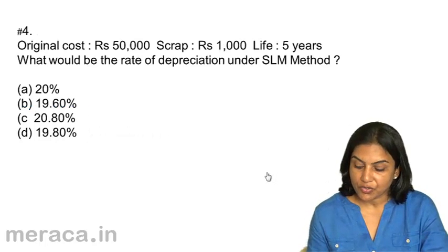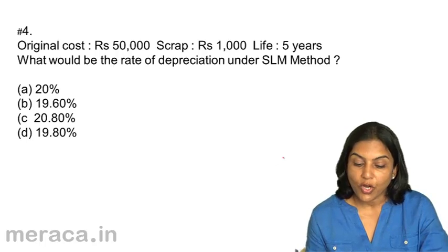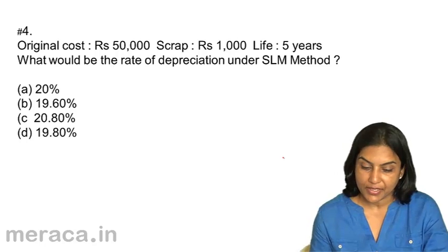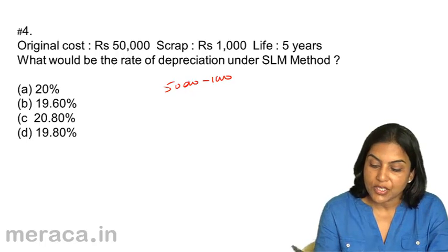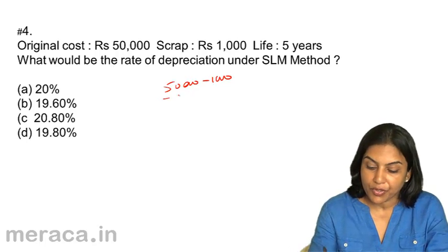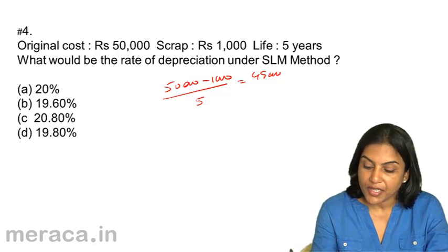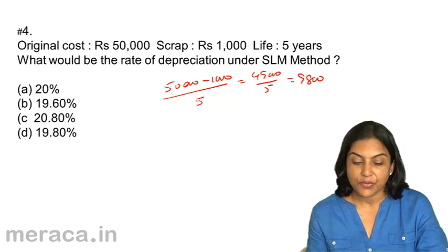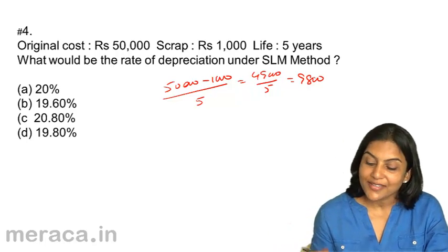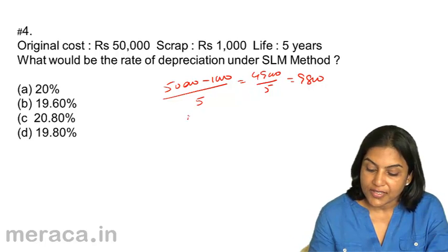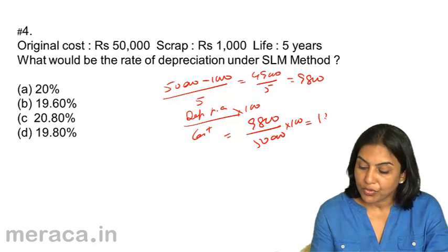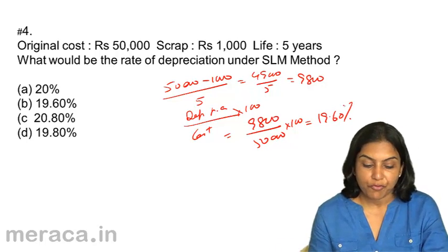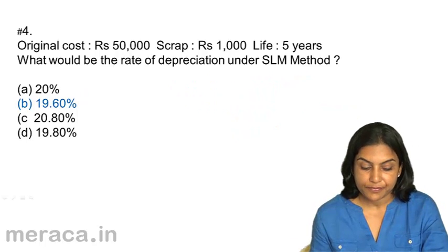Next: original cost is 50,000, scrap is 1,000, life is 5 years. What would be the rate of depreciation under the straight line method? The depreciable amount is 50,000 minus 1,000 equals 49,000. Divided by 5, this gives 9,800 depreciation per year. The rate of depreciation is the depreciation amount per annum divided by the cost of the asset into 100, which is 9,800 divided by 50,000 into 100, equal to 19.60%. The correct answer is 4B — 19.60.